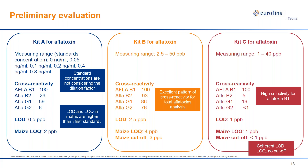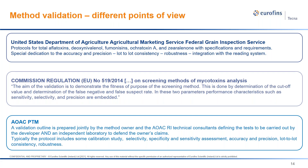Is there one single validation approach for mycotoxin screenings? Definitely not. For the following discussion, I have decided to compare one international guideline with the scopes and approaches of two famous certification bodies, aiming to highlight common points and differences. The first one, widely adopted by mycotoxin kit producers, is the FGIS from the United States Department of Agriculture. Specific, very clear and well-described protocols are publicly available on their website and define exactly what to measure, how to measure, and the acceptance criteria for each measurement.